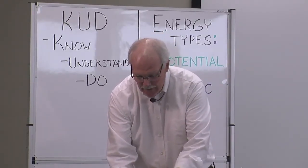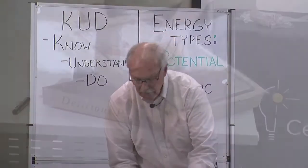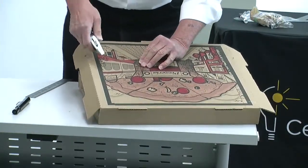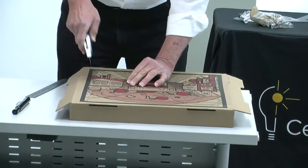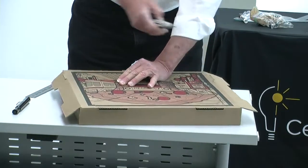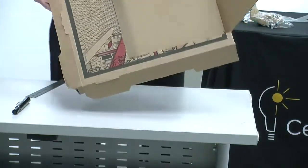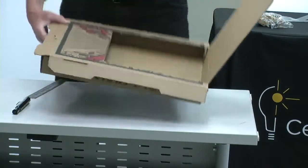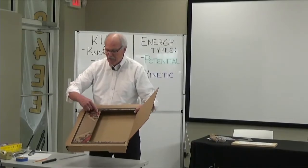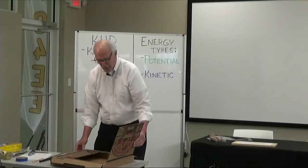Looks like Professor Wood put the blade away too early — this is what happens when you get old, you can't see what you're doing. There we go. Now we have the flap. If you've got a large-size box, you can cut yours a little bigger than this, but that'll work for what we're doing today.